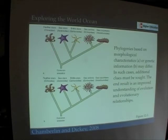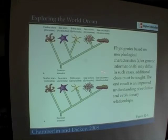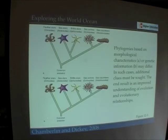We find that sea stars and brittle stars are more closely related to each other than either is to sea urchins or sea cucumbers. In a different kind of tree, we might find that each evolved independently in different ways, but we know they all evolved from a common ancestor.